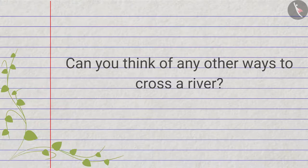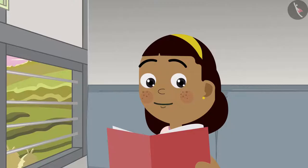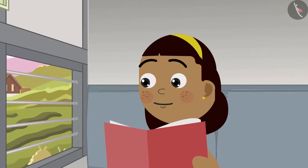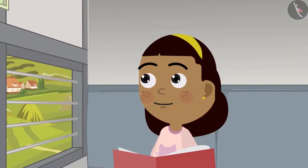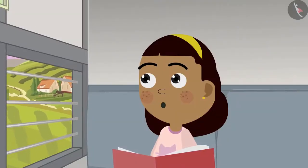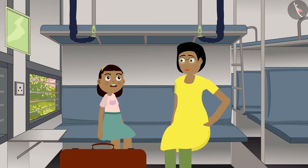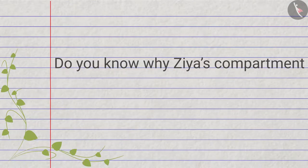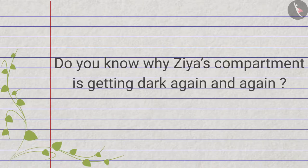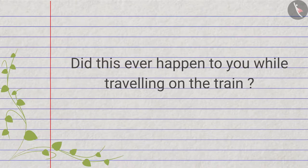Zia starts reading comics after breakfast, then suddenly it becomes completely dark. She wonders who turned off the lights and how she will read comics now. After a while the compartment fills with light, but it becomes dark again and then lights up again. Zia asks her mother why it keeps getting so dark. The video asks: do you know why Zia's compartment is getting dark again and again? Did this ever happen to you while traveling on a train?